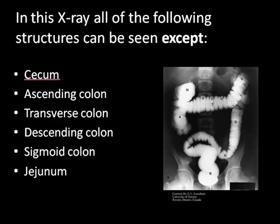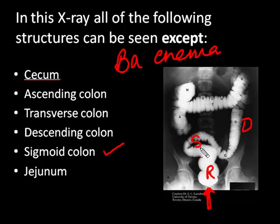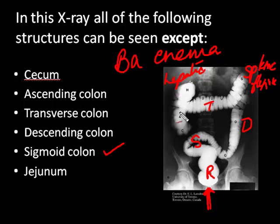The next question asks which of the listed structures is not seen in this x-ray. This is a special x-ray known as a barium enema — enema meaning it's given from below. The dye is pushed in through the anal canal, outlining the rectum, then the sigmoid colon. Passing upward is the descending colon, then the transverse colon. 'S' marks the splenic flexure near the spleen, 'H' marks the hepatic flexure near the liver. Then comes the ascending colon, and finally the dye passes into the cecum.